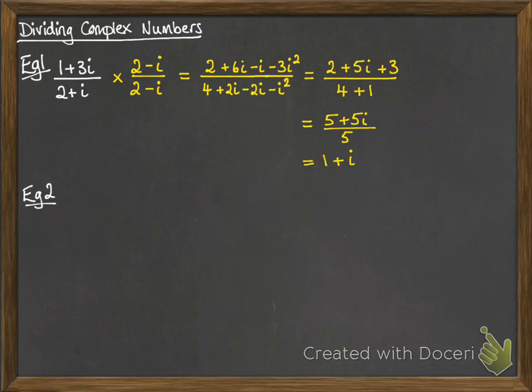Okay, next example. Find the real and imaginary parts of z equals 2 over 6 plus 5i. So, we can't just straight off read off the real parts and the imaginary parts of that one. We need to turn this into the conventional format of x plus iy for a complex number.